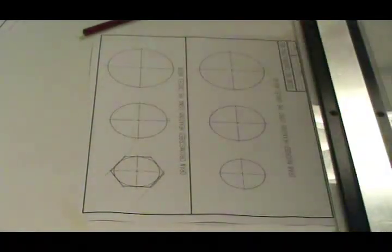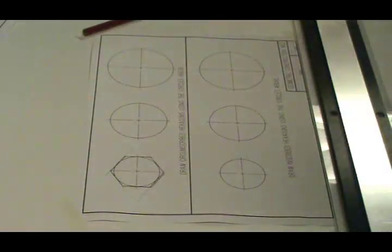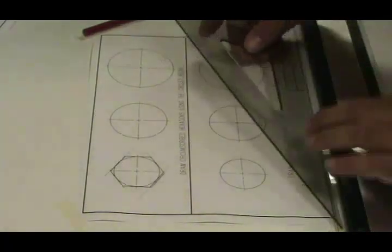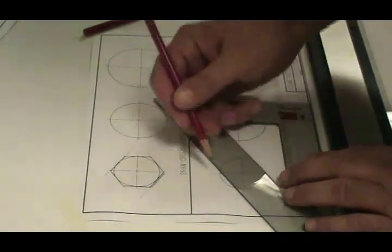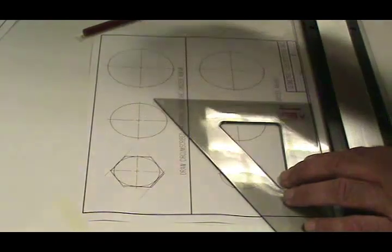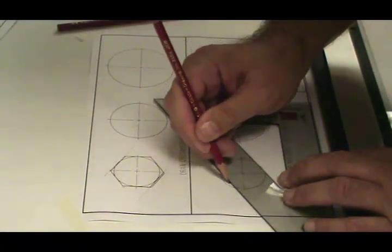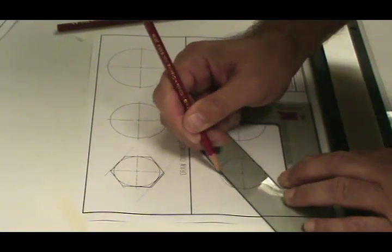Next we want to draw an inscribed hexagon on these bottom three circles. In this case I'm going to take my triangle and line it up where the center line intersects with my circle. I'm going to draw a line until it hits the other edge of the circle at 30 degrees.